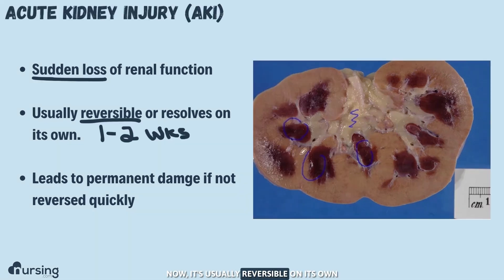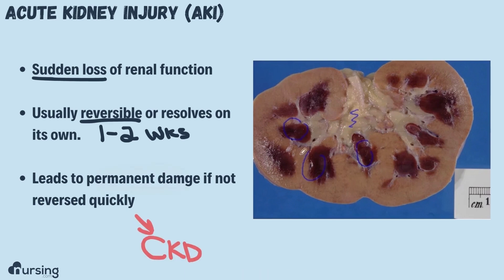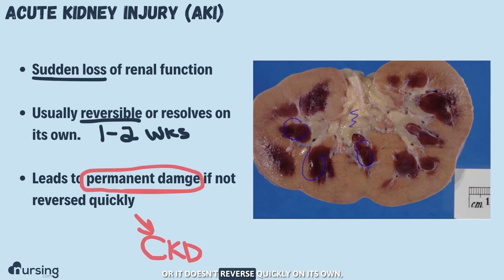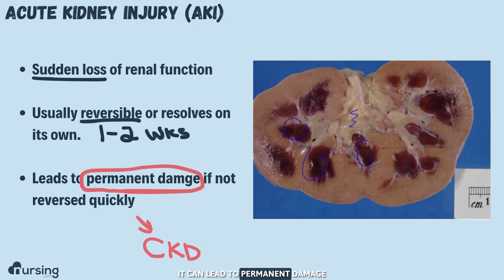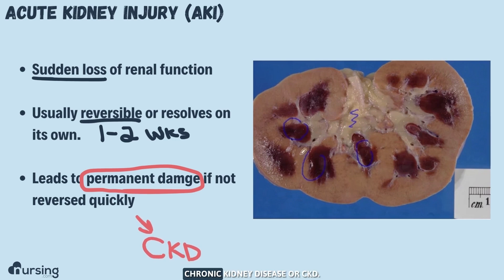It's usually reversible on its own within about one to two weeks. If we aren't able to reverse it or it doesn't reverse quickly on its own, it can lead to permanent damage and cause the patient what's called chronic kidney disease, or CKD.